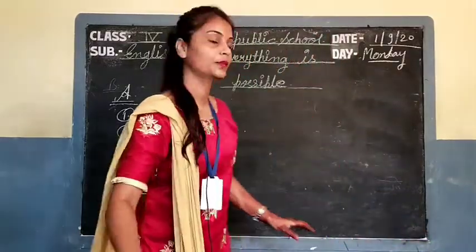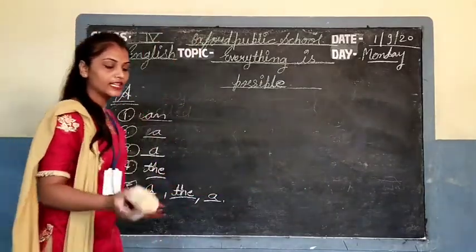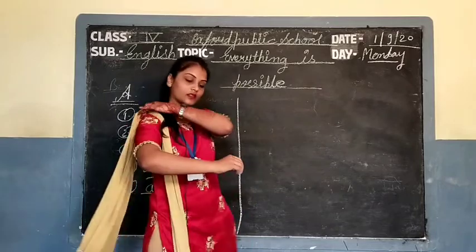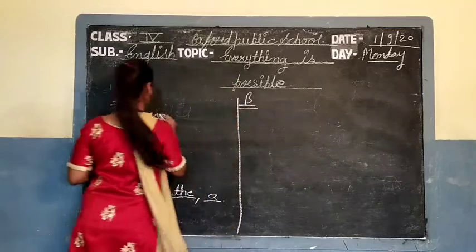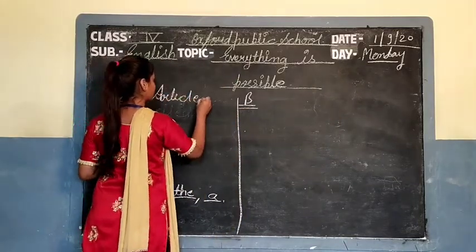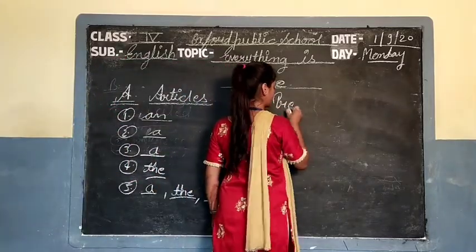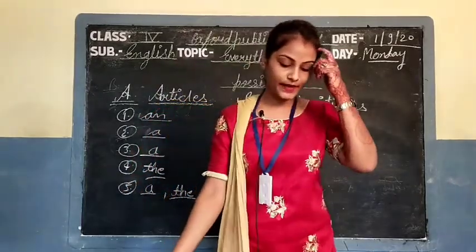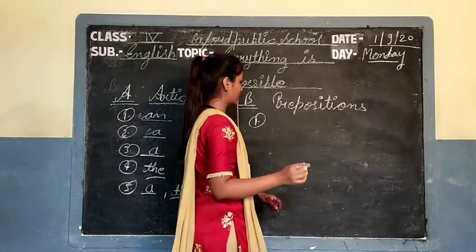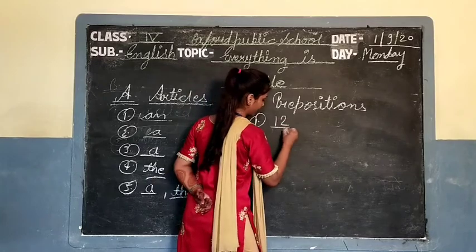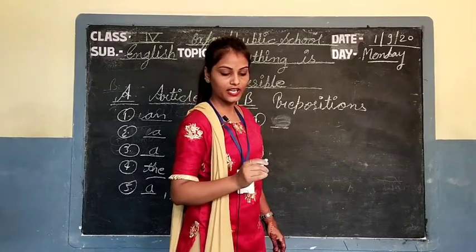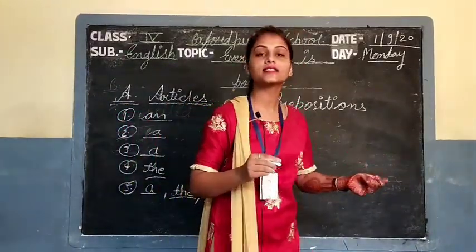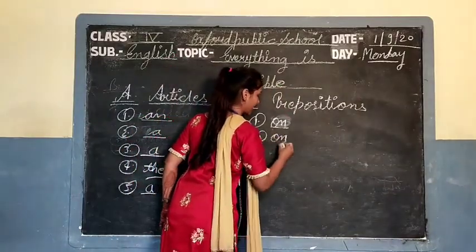Next page, page number 24 — prepositions. Fill in the blanks with suitable prepositions. तो हमें blanks fill करने हैं prepositions से। First: 'His birthday falls ___ 12th May' — on. Second: 'Where will you go ___ Sunday?' — on.